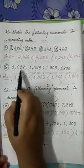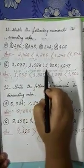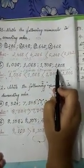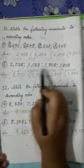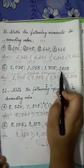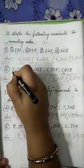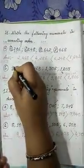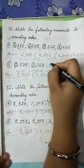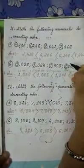Question B has the numbers 1038, 1083, 1308 and 1803. Again, all four numerals have 4 digits, so let us compare the digit at the leftmost place first. Here the digit in the leftmost place is 1 for all four numbers.